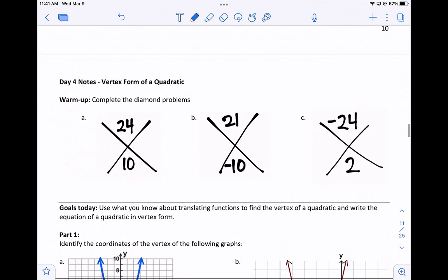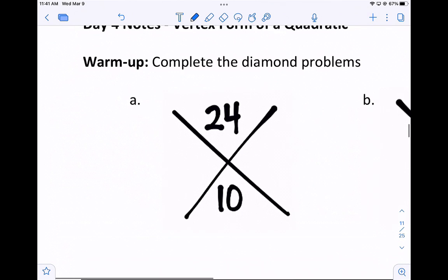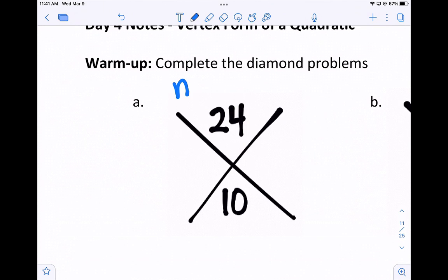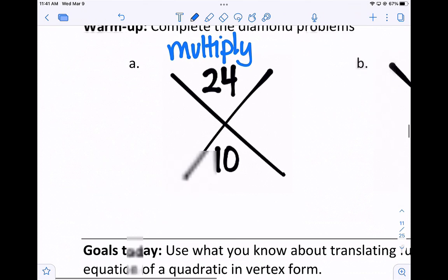We'll start with a quick review from the end of the assignment from yesterday. You learned about these things called diamond problems, and in a diamond problem, you want two numbers that multiply to the top number that add to the bottom number.